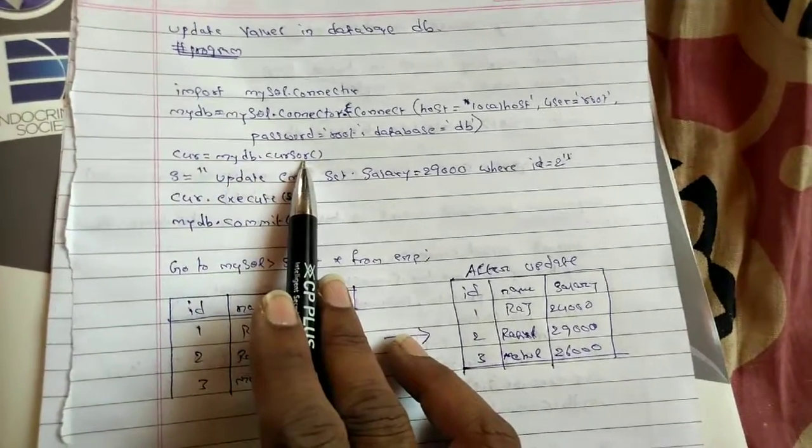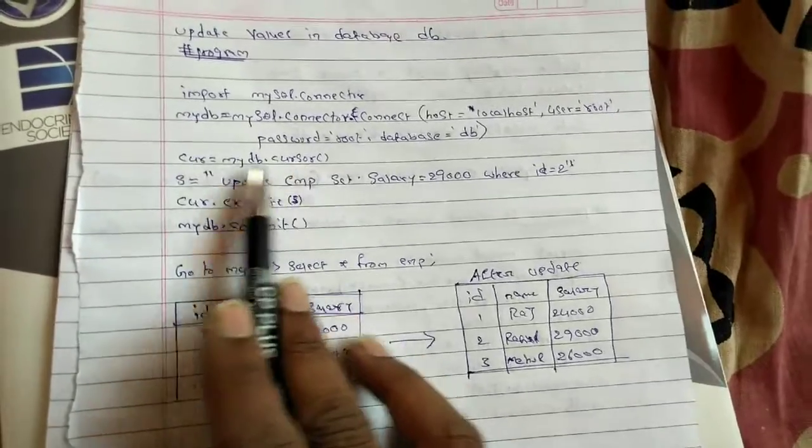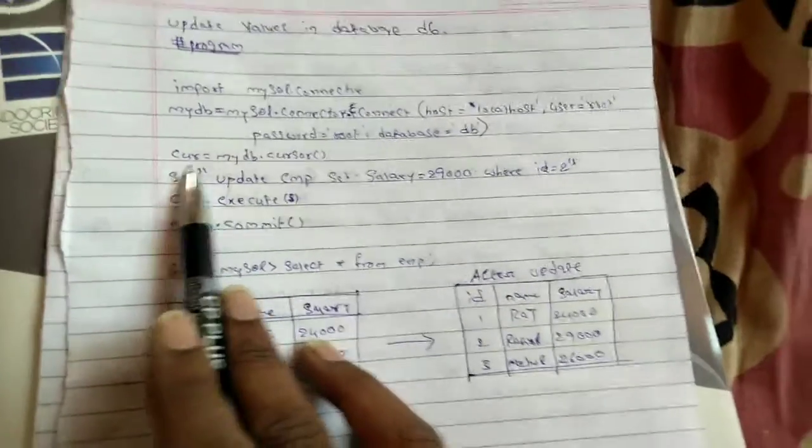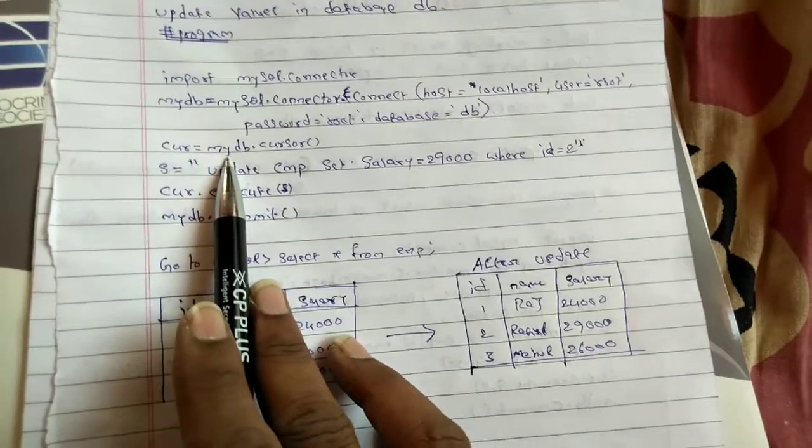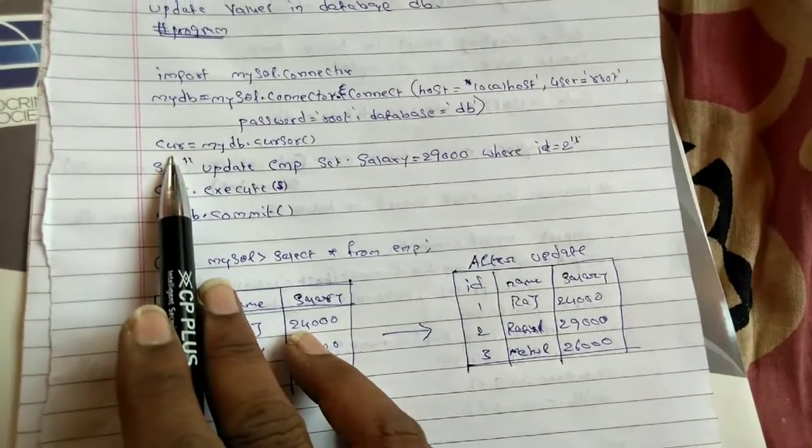So mydb will execute a cursor - these two will be stored in a variable called cur. So the cursor method that will be implemented on my database will be stored in the cur variable.